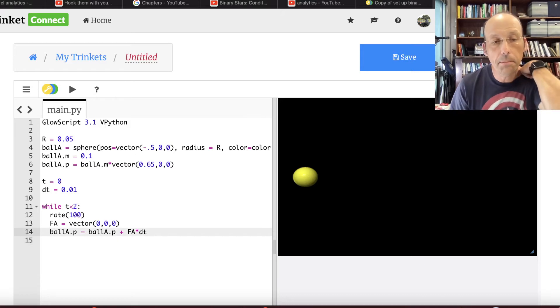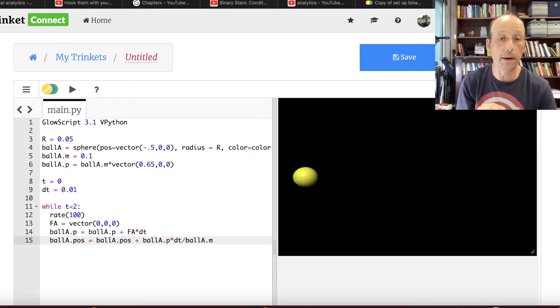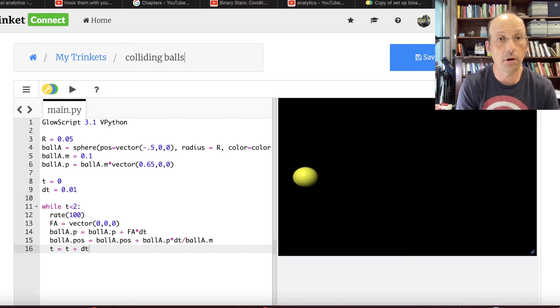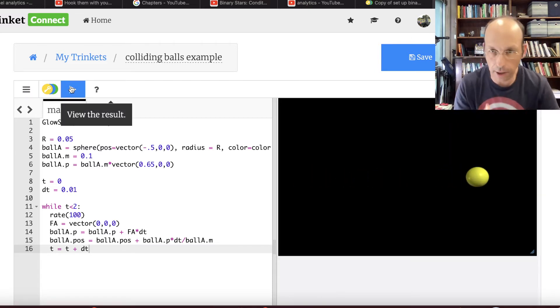Ball A dot P equals ball A dot P plus F A times DT. So it's not going to update because F A is the 0 vector. But I can add that in later and change it. Now, and this is important. In Python, this is a make equal to sign. So it takes that value and it makes it equal to the new value. So it is P1 and P2 and P3. It's all those P's. Now I need to update the position, ball A dot POS plus ball A dot P times DT divided by ball A dot M. So that's that P divided by M times DT. Now I'm going to update time and I'm going to save it. Colliding balls example. I'm going to run it. Moving ball. Okay, we're happy. I'm happy.